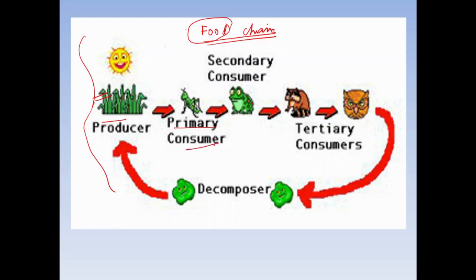Primary consumers feed on the producer. There occurs a transfer of food occurring from the producer to the primary consumer.